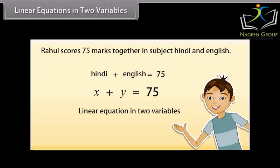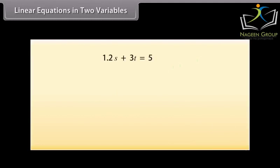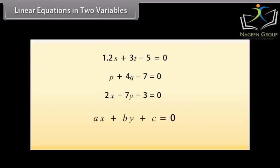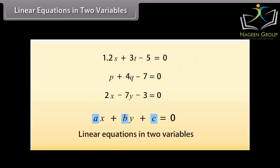Some other examples of linear equations in two variables are: 1.2S plus 3T equals 5; P plus 4Q equals 7; and 3 equals 2X minus 7Y. We can put these in the form: 1.2S plus 3T minus 5 equals 0; P plus 4Q minus 7 equals 0; and 2X minus 7Y minus 3 equals 0. So any equation that can be put in the form AX plus BY plus C equals 0, where A, B, and C are real numbers and A and B are not both zero, is called a linear equation in two variables.